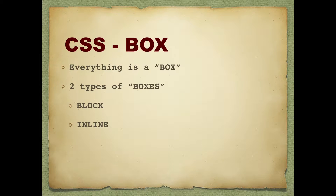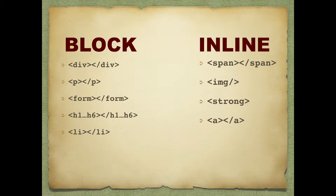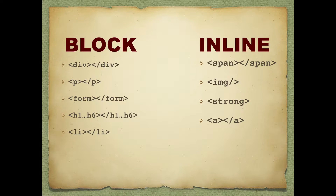Some of the block elements inside CSS are div, paragraph, form, h1 to h6 headings, and li elements, and many more. Some of the well-known inline elements often used are span, image, anchor tags, and the strong tag. I'll explain the difference between block and inline using a drawing.